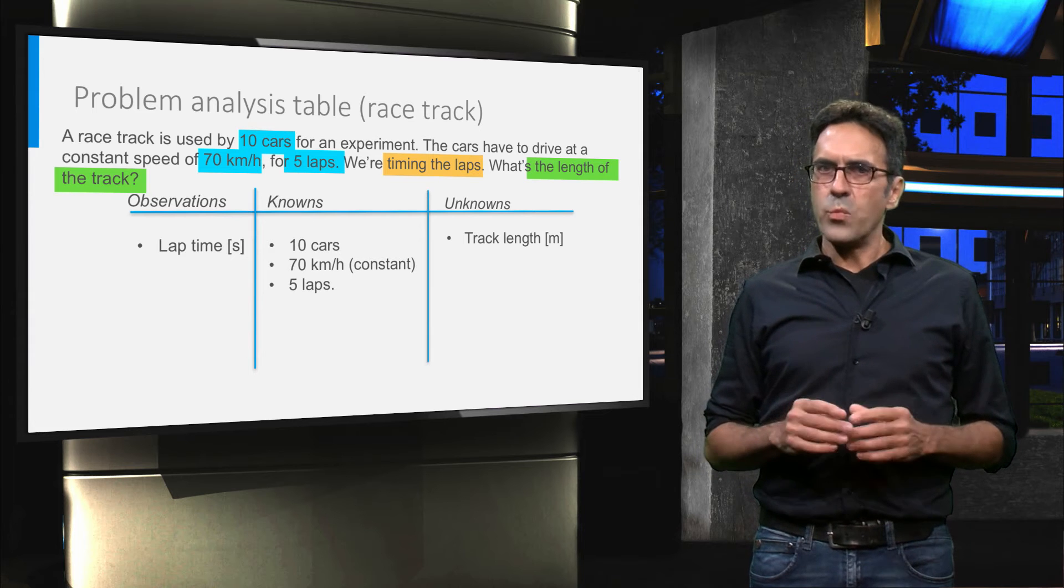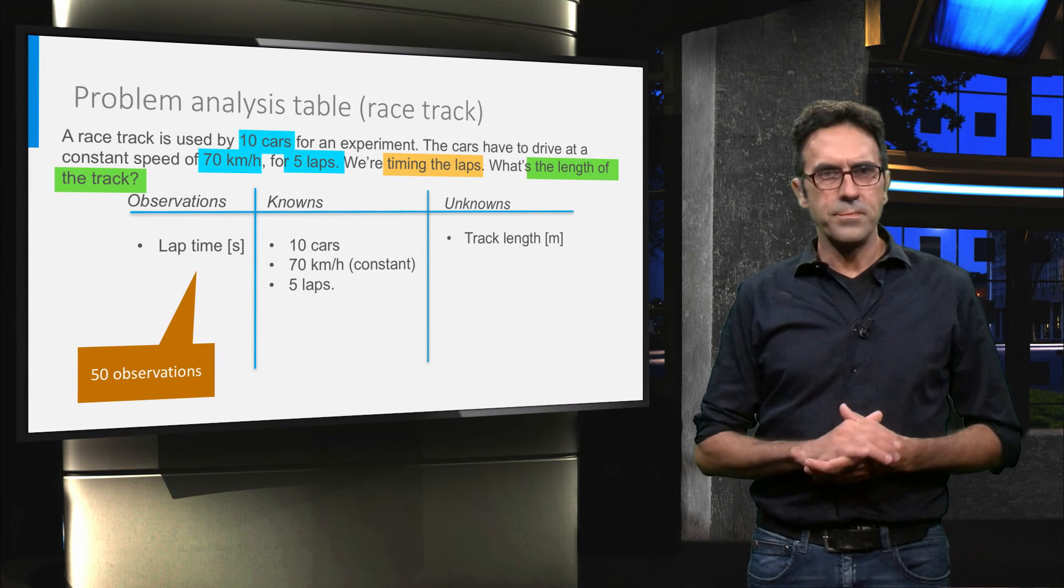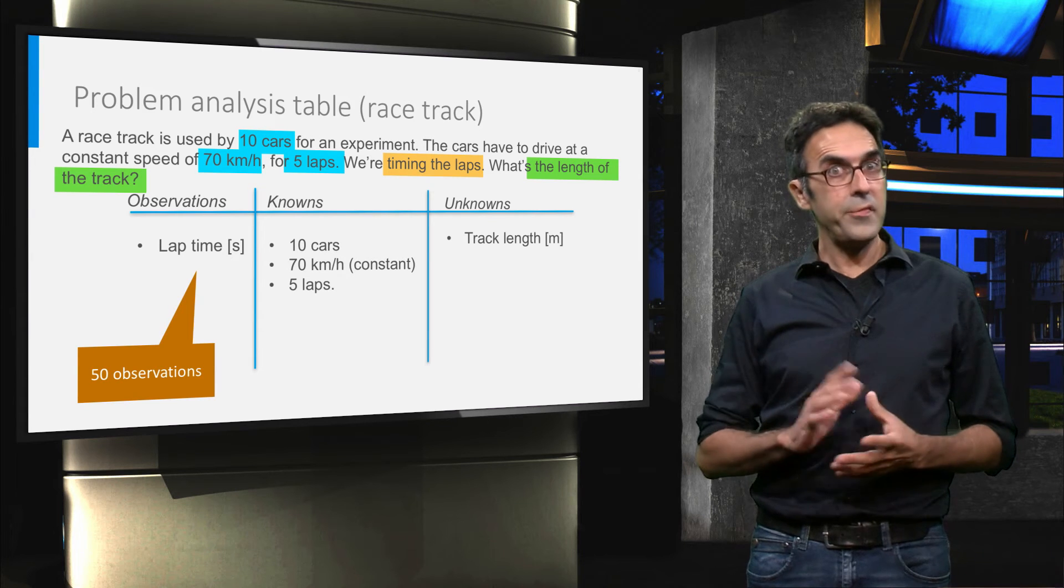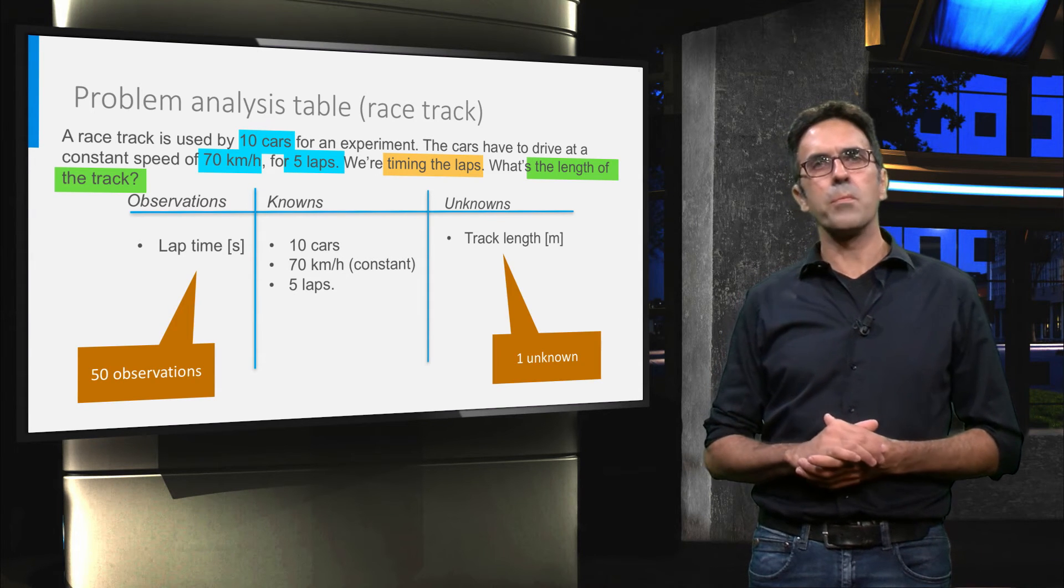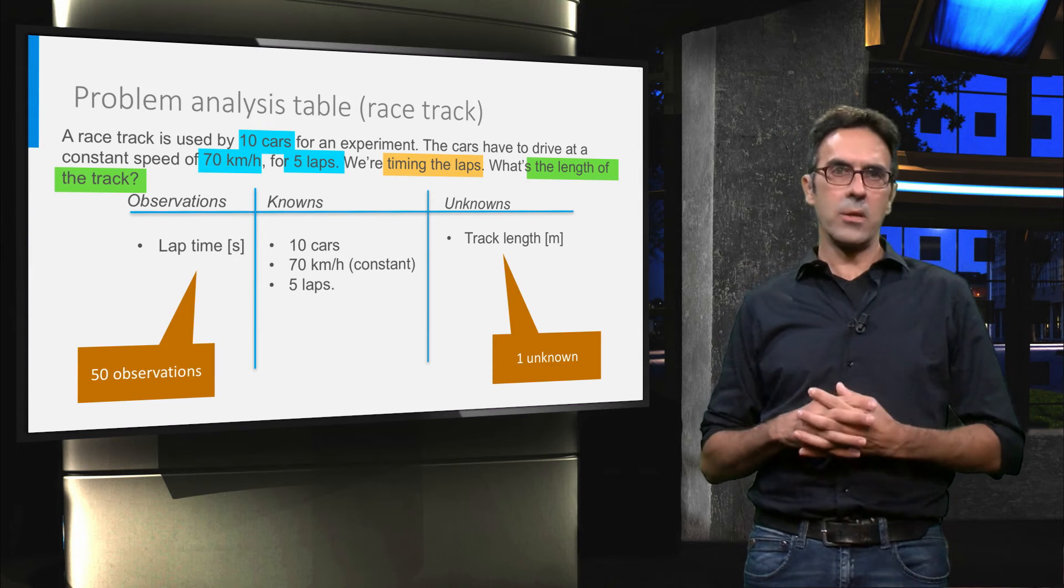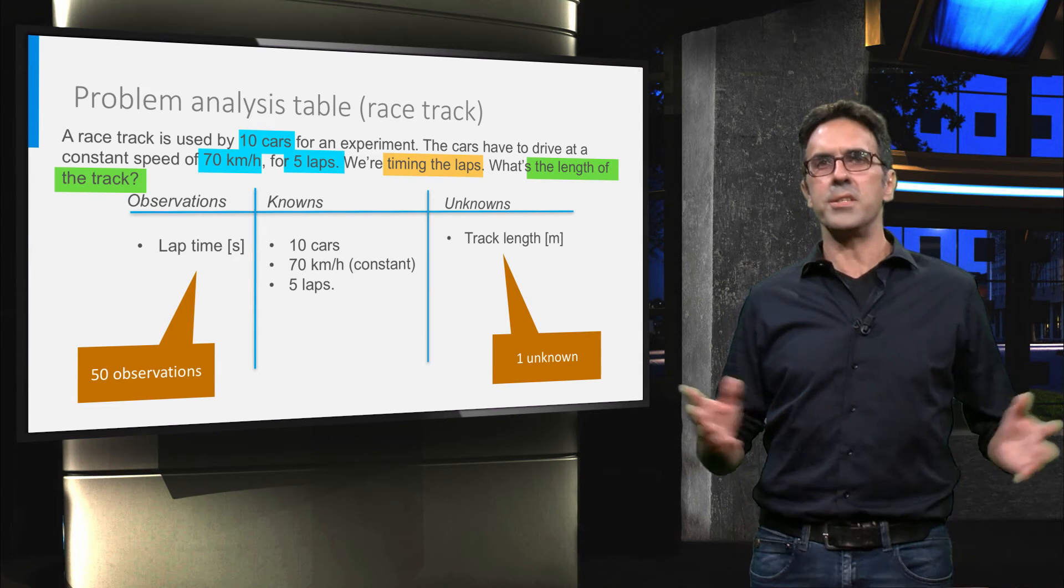We can then conclude that we have one observable, which is time, but we have fifty observations, compared to only one unknown parameter, the track length. It's easy, right?